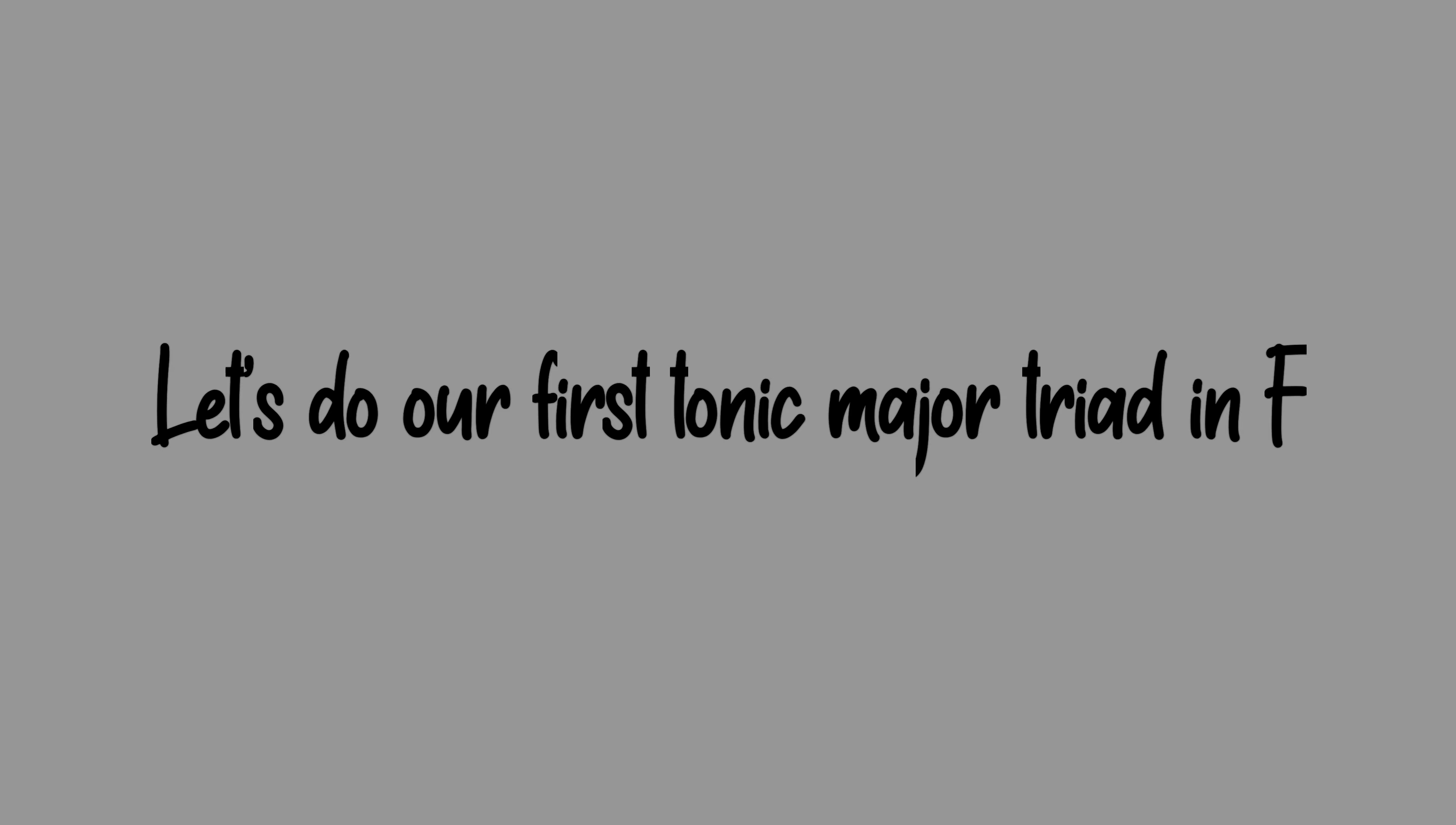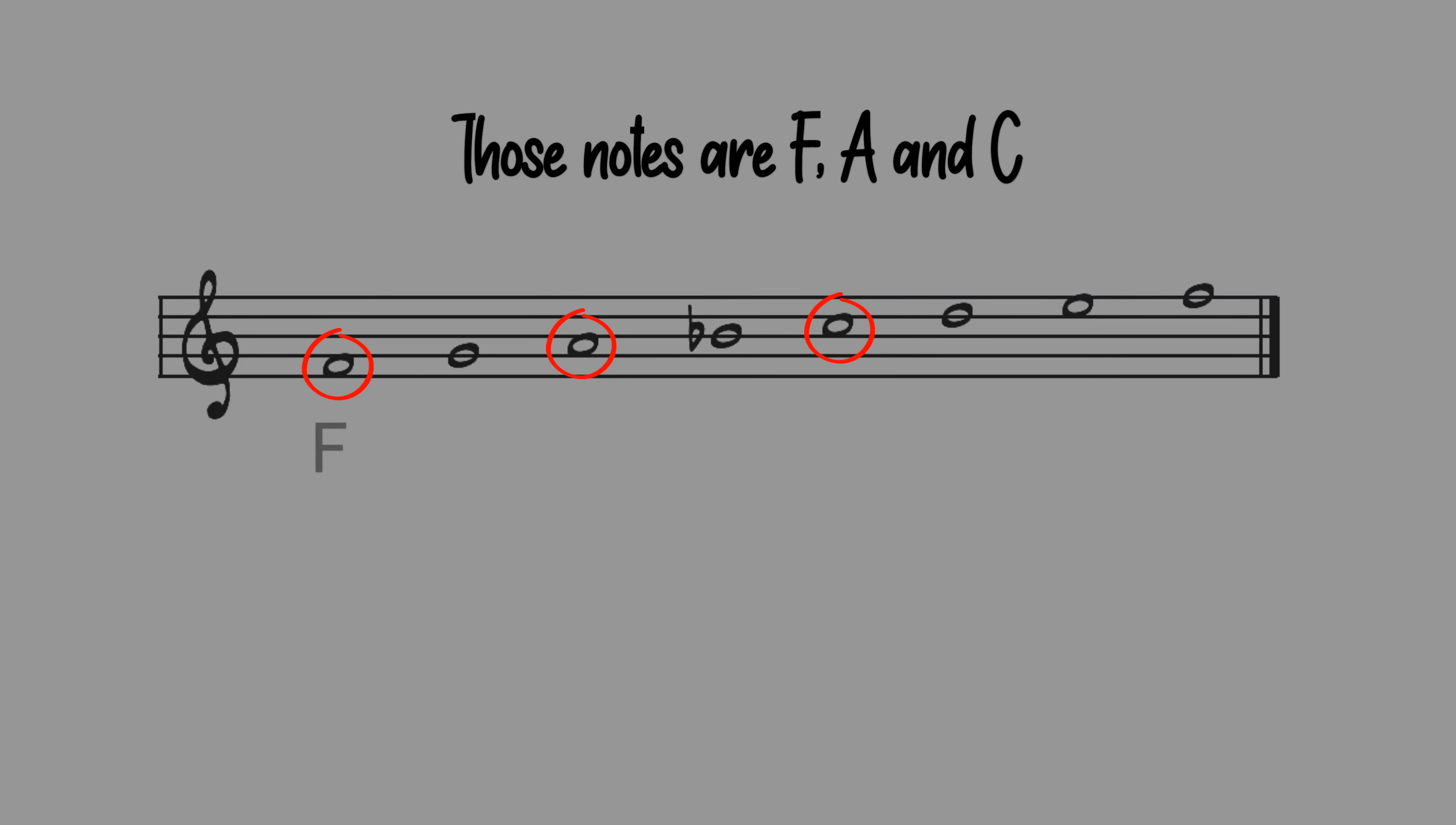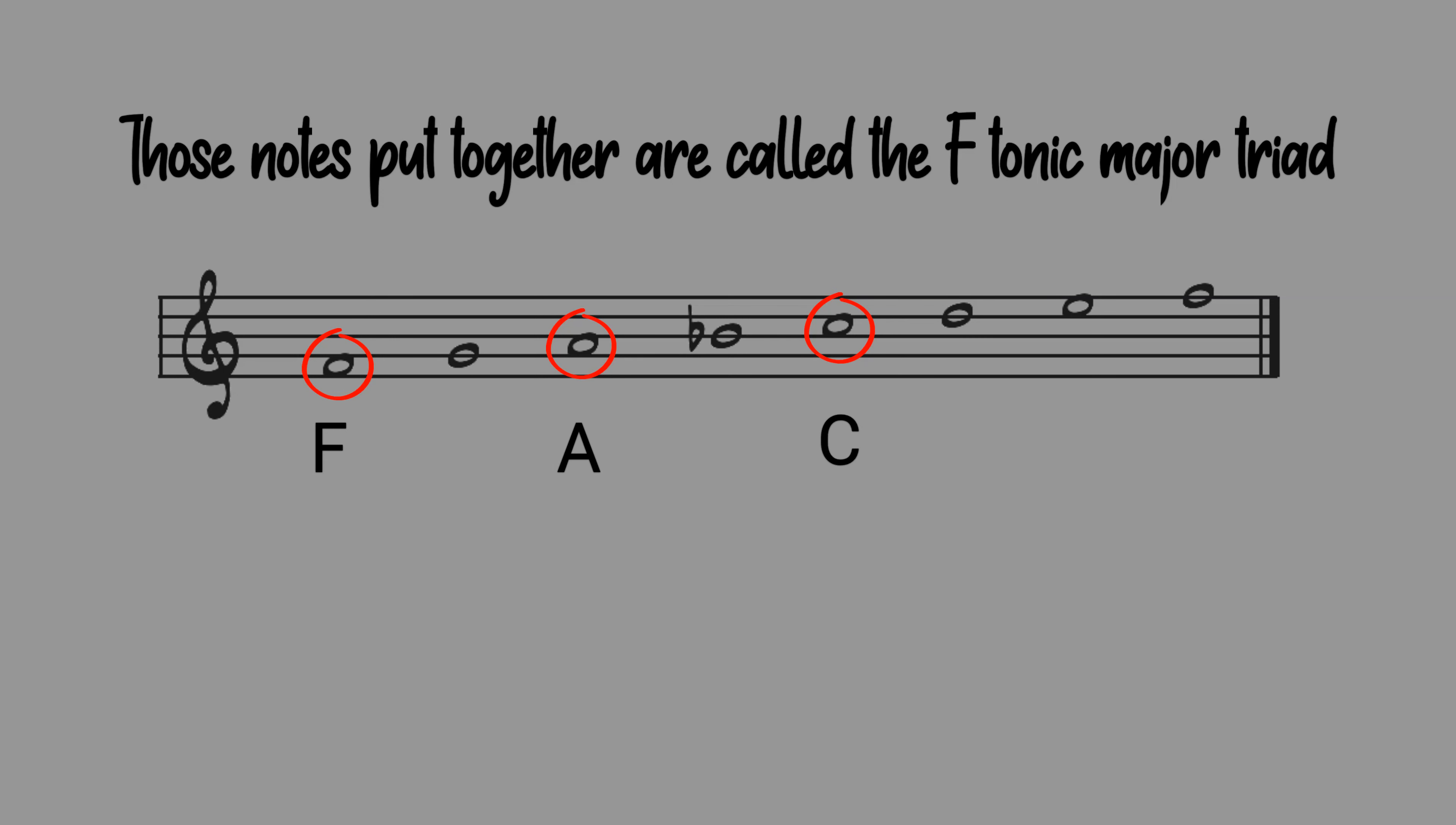Let's do our first tonic major triad in F. We use the F major scale and take the root, major third and perfect fifth. These notes are F, A and C. Those notes put together are called the F tonic major triad.